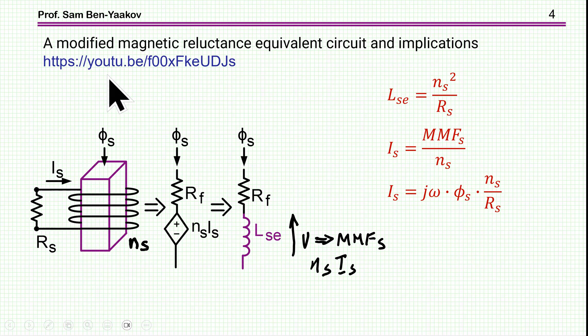So in this equivalent circuit, reluctance is a resistor, flux is current, and MMF is voltage, or voltage drops. In a previous video, I've shown a modification to the reluctance equivalent circuit, and in this modification, rather than showing a reluctance, plus a voltage source of the MMF, current times number of turns, I've shown that you can replace it by an inductor. The value of this inductor is N squared over RS, where RS is the load.